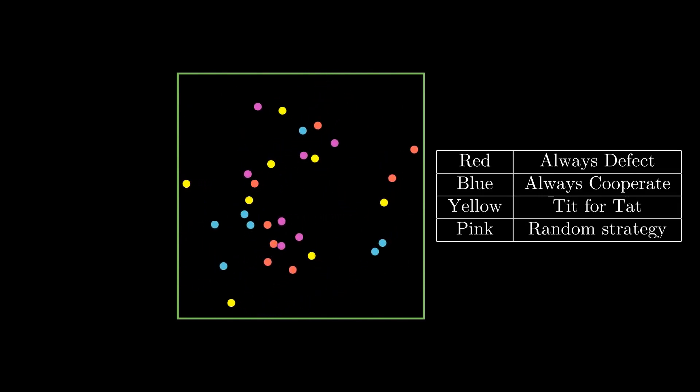now tit-for-tat does what's always the seemingly best option, defecting with a defector and cooperating with a cooperator. But it doesn't get any temptation rewards that always defect strategy gets. Therefore, I root either for always defect strategy or tit-for-tat strategy to earn highest rewards in this particular case.